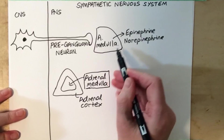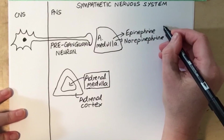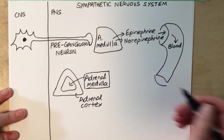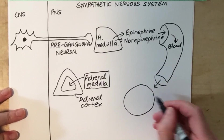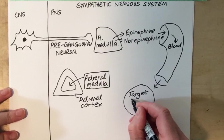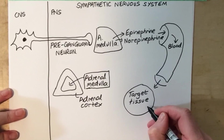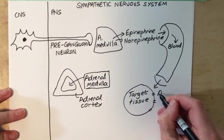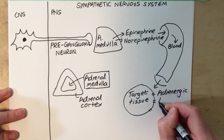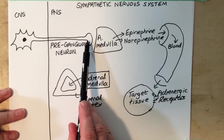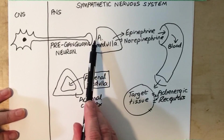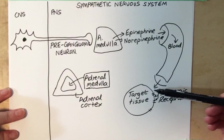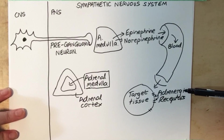Because this is an endocrine gland, the two substances that are secreted will move into the bloodstream and be transported around the body. When these hormones reach the target tissues — which will still be either a smooth muscle, a cardiac muscle, or a gland — they will bind to the same family of receptors, the so-called adrenergic receptors.